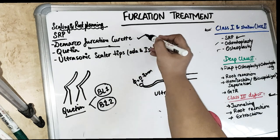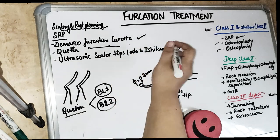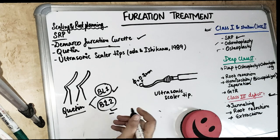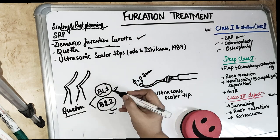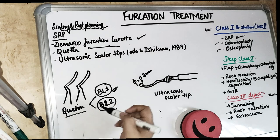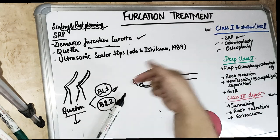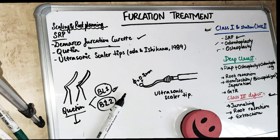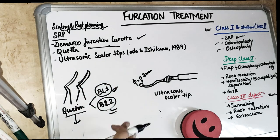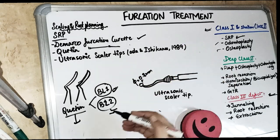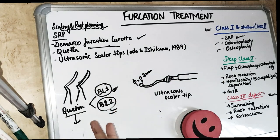The first one is the DeMarco furcation curette. We also have the Quetene furcation curette, which comes in two types — BL1 and BL2 — based on the blade width. These Quetene curettes are half-moon shaped and can go deep into the furcation area, into the floor of the furcation and into developmental depressions. They have better access to reach the furcation, which is why we use them.